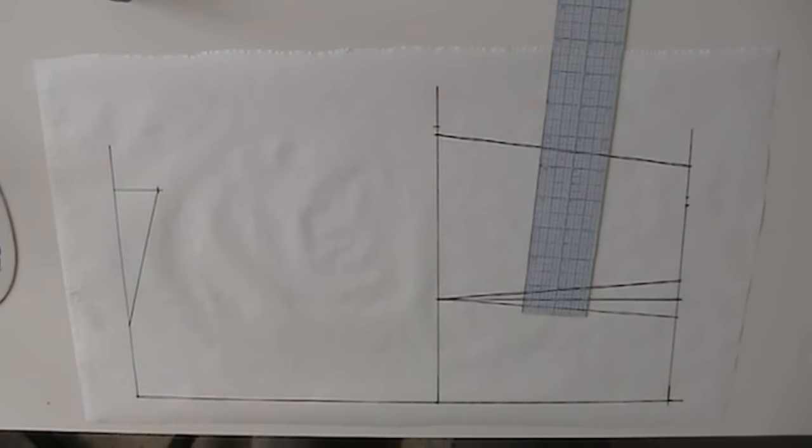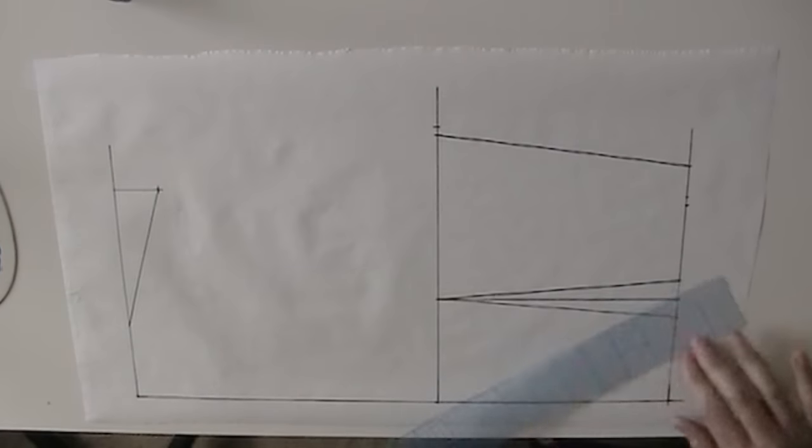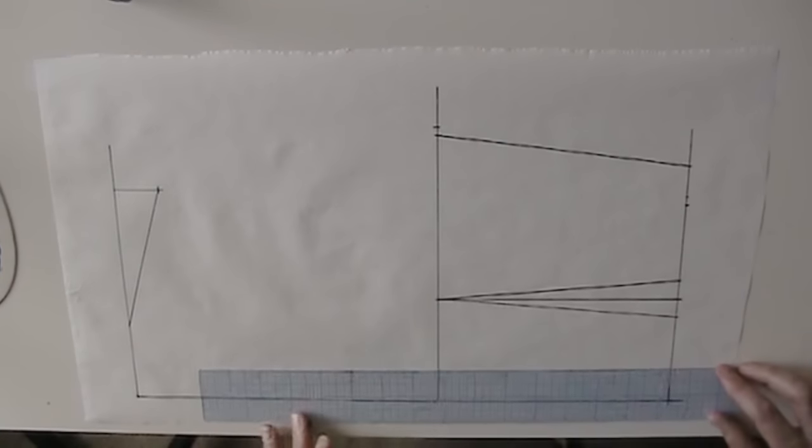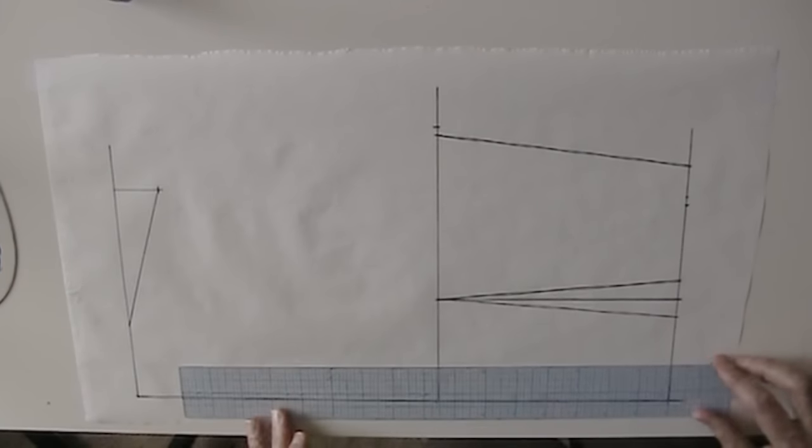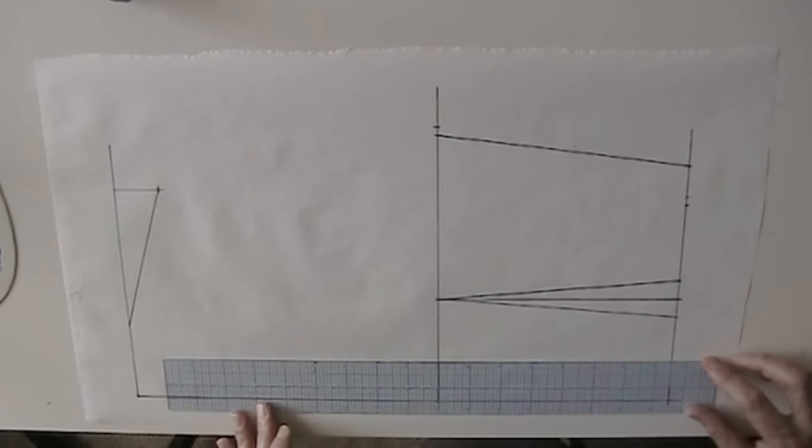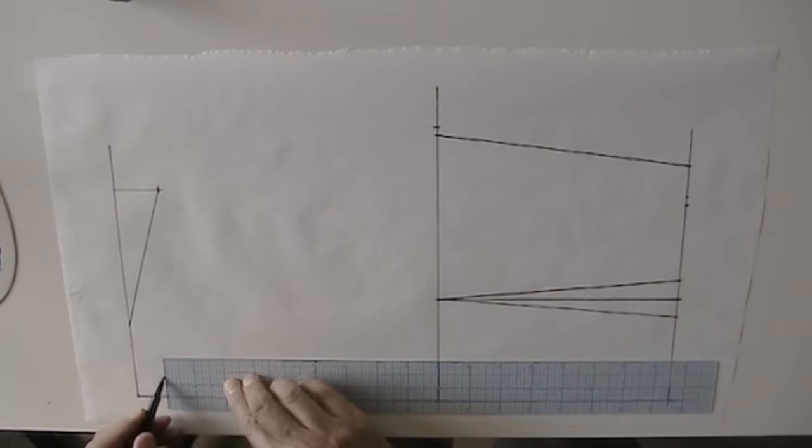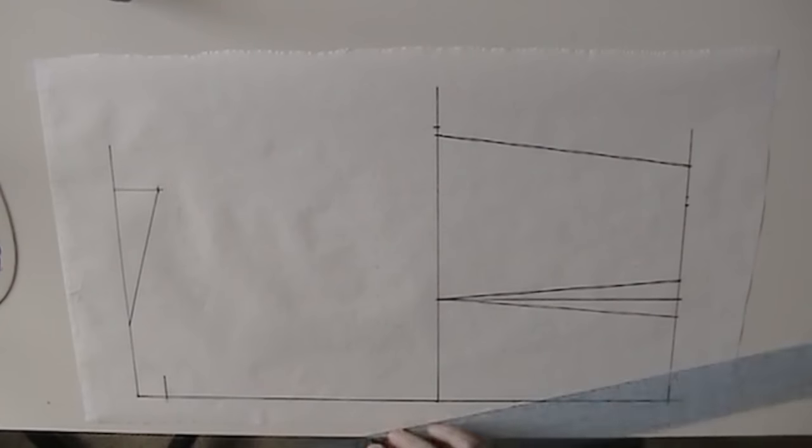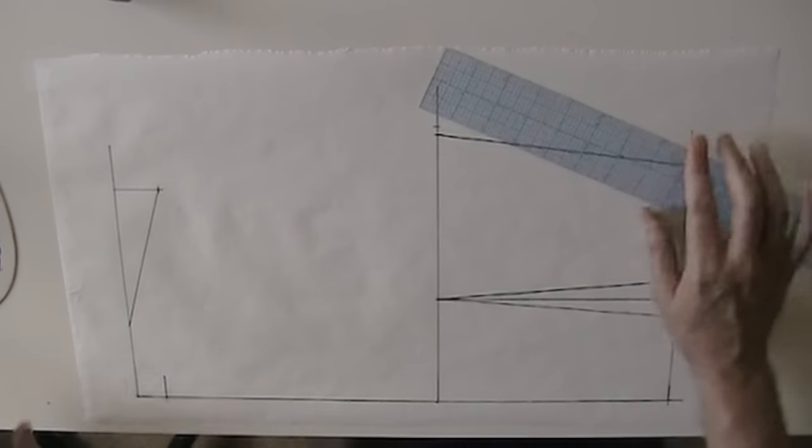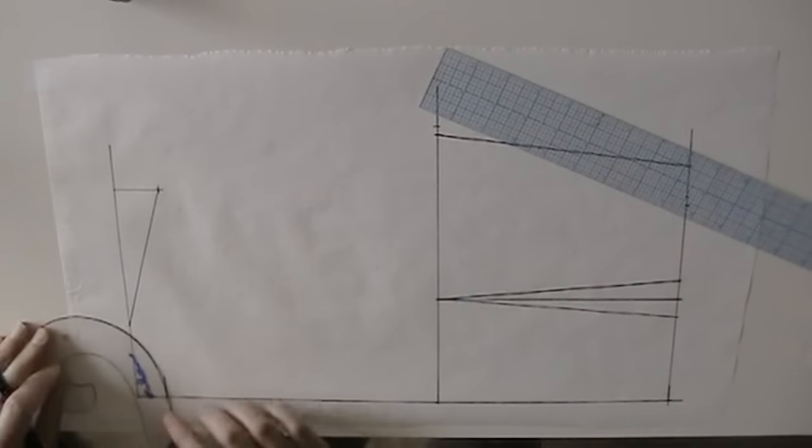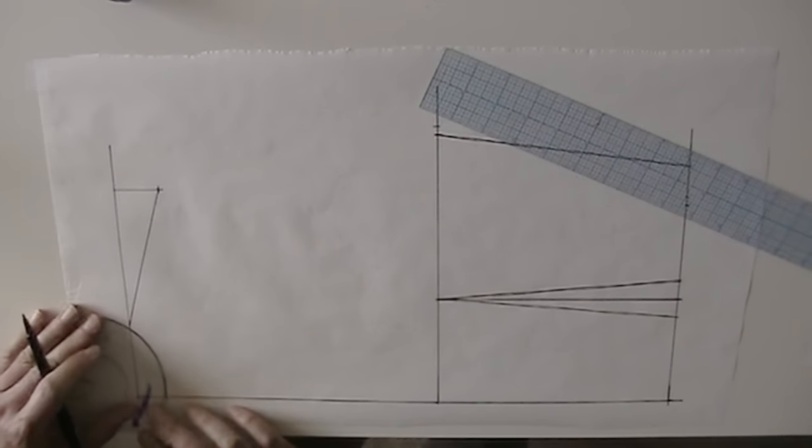Now what about the back neck? Now I'm going to measure up from the bottom, from the waist, the distance my center back, neck to waist, which is 16 and a half inches. And I'm going to square a line here, a short one. And I'm going to take my French curve and draw a curved line.